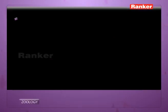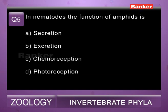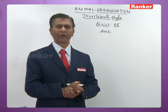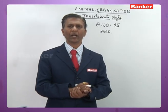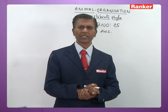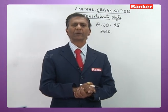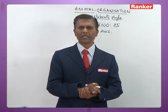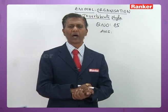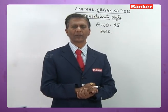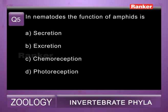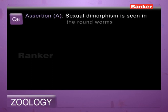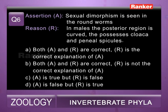Question number five: in the nematode, the function of amphids is — a) secretion, b) excretion, c) chemoreception, d) photoreception. Nematodes have two kinds of sense organs: amphids and phasmids. Phasmids are glandular sensory structures present in the tail region. Amphids are chemo-olfactory and are present on the lips. So the fifth question's correct answer is c) chemoreception.